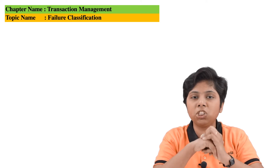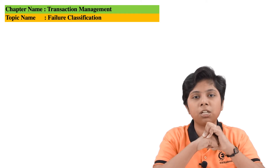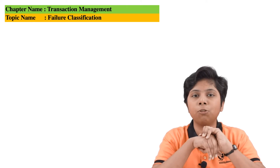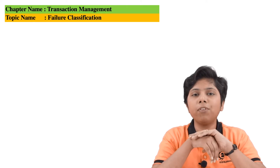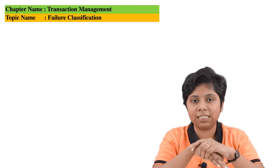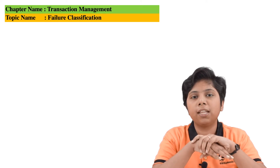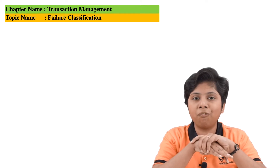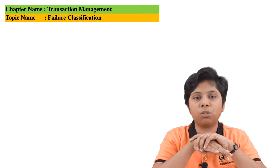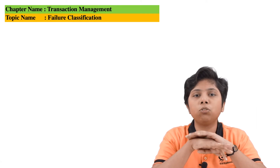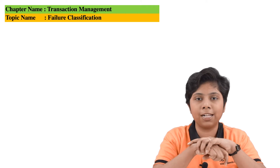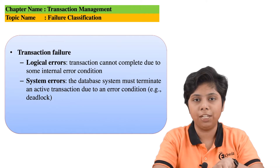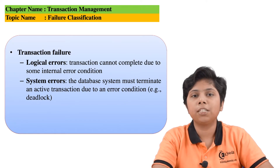When it goes to a failed state, that means the transaction that was partially committed was unable to complete in an atomic way. When we talk about atomicity and consistency, we must know what type of failure is happening. There are a number of failures associated with transactions, and we will now discuss the major failure classifications.